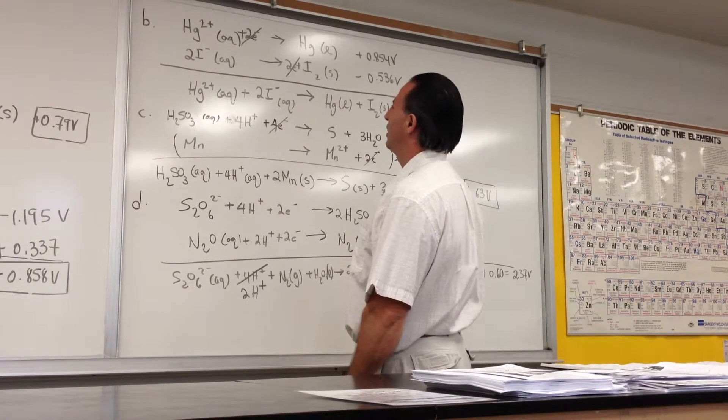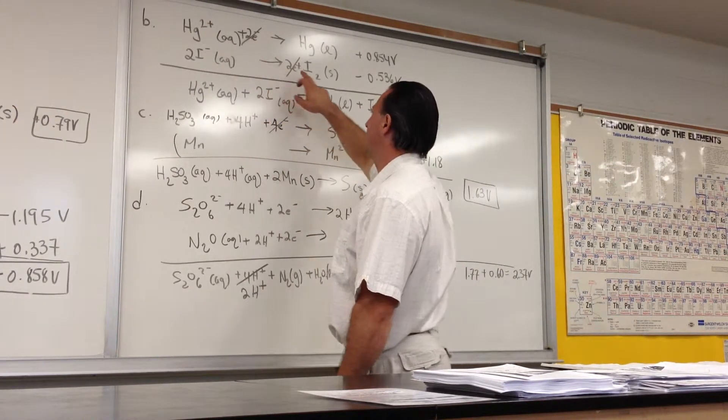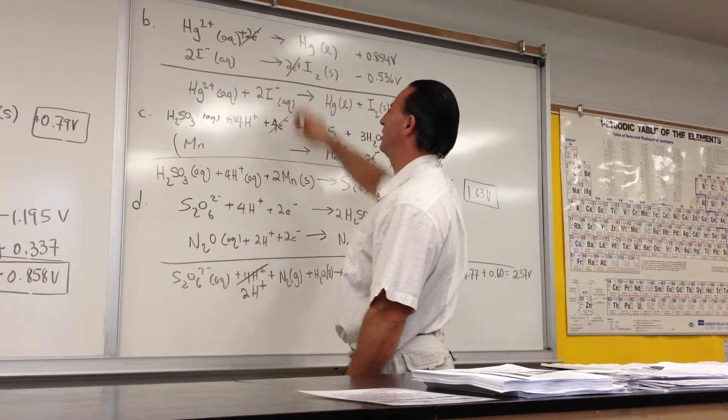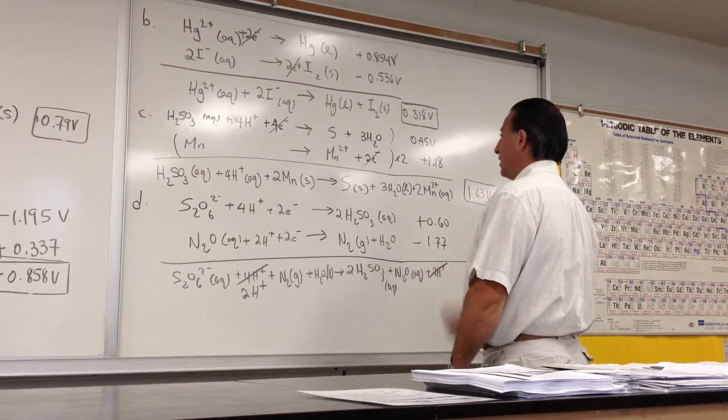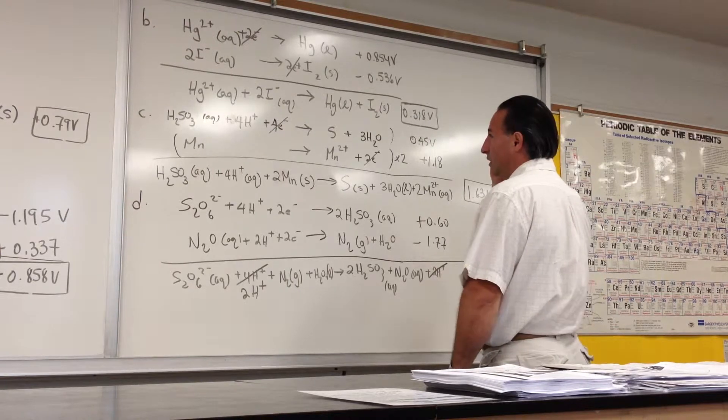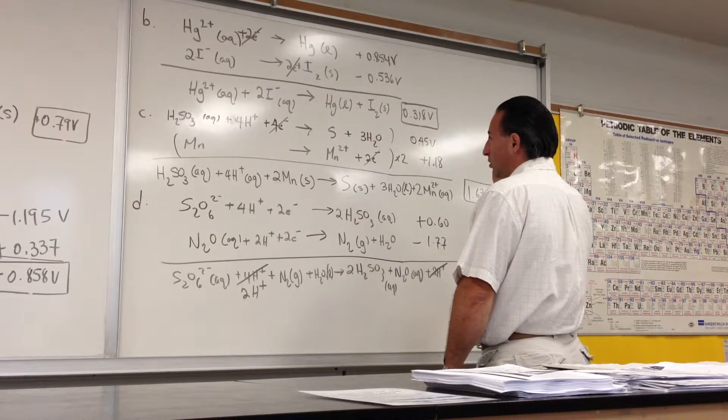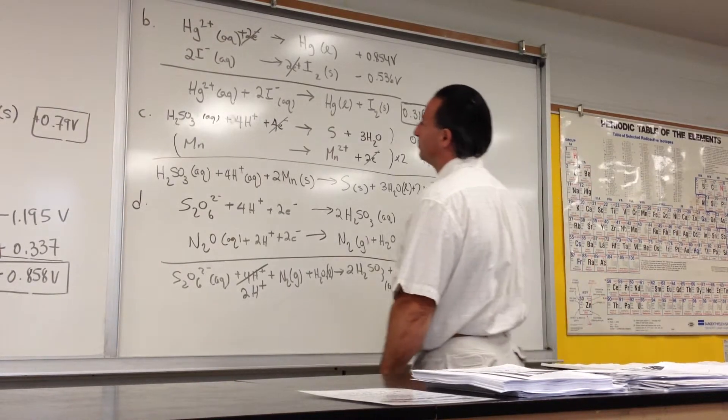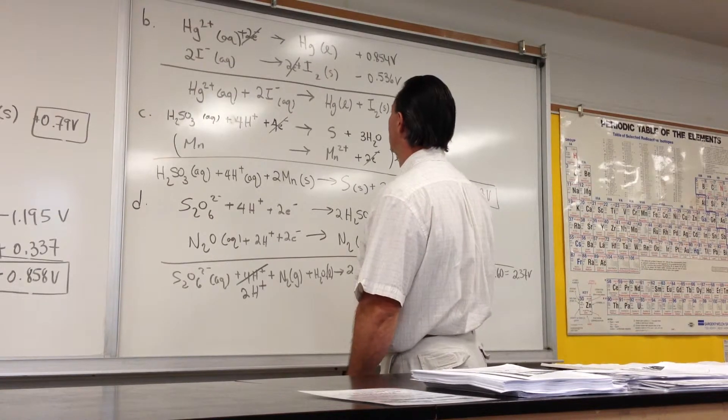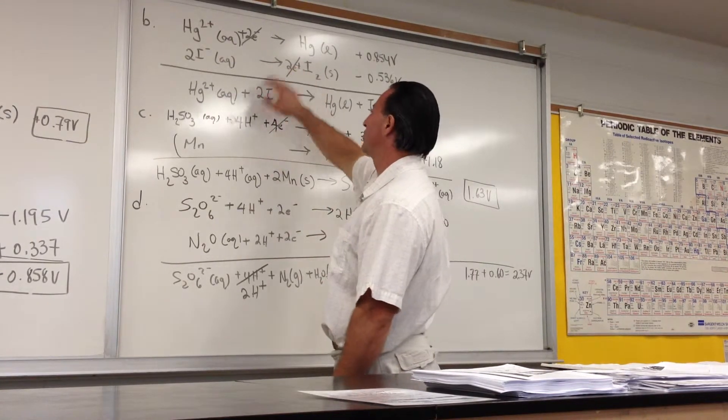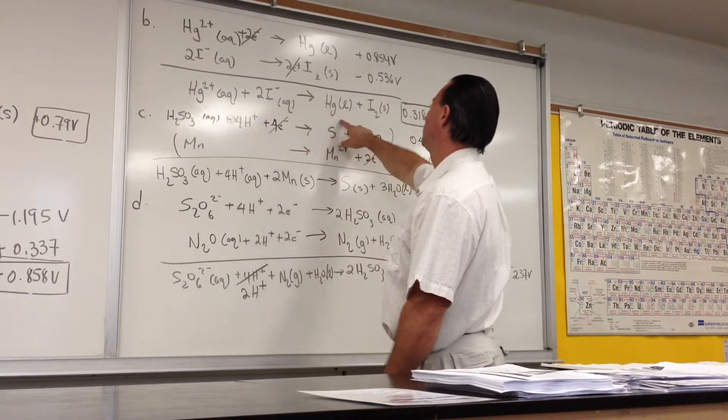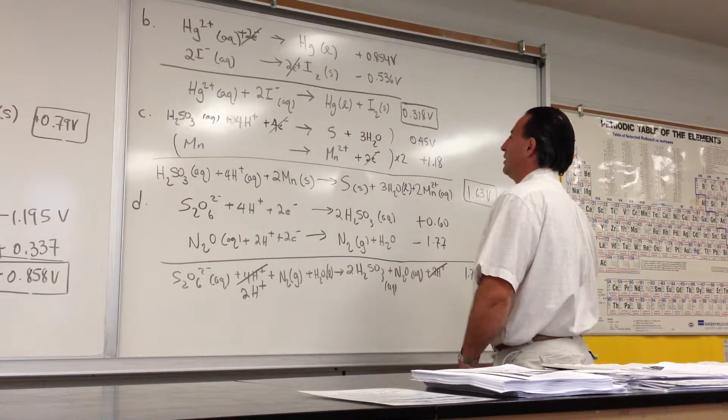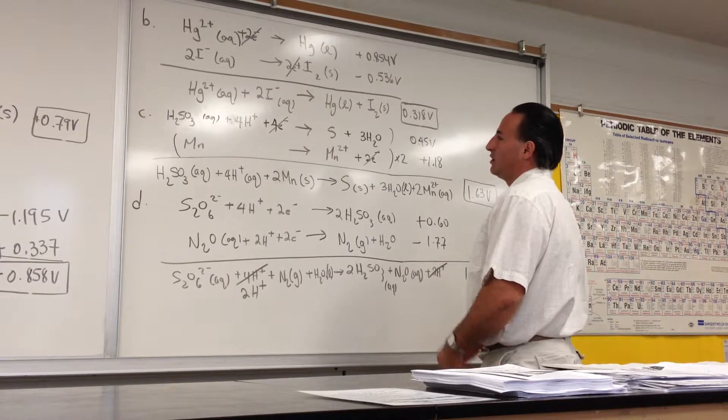And two electrons are accepted by the mercuric cation, and two electrons are released by the iodide as it gets oxidized to elemental iodine. So the net reaction shows no electrons. We have mercuric cation aqueous with iodide giving you metal mercury and solid iodide.